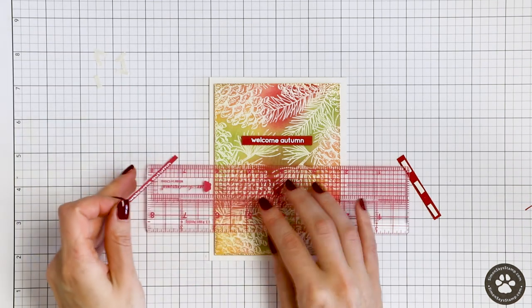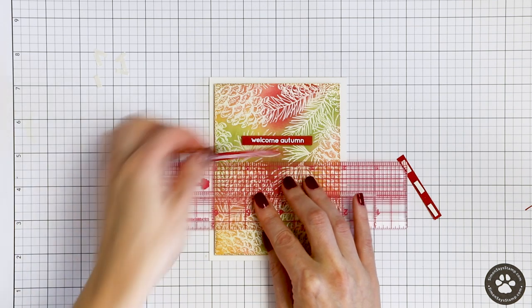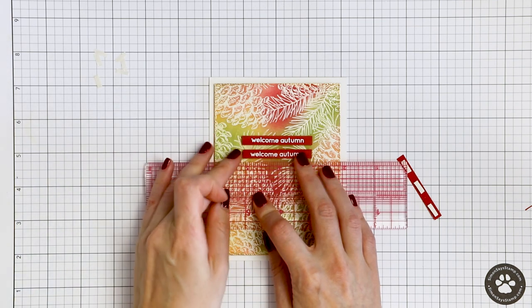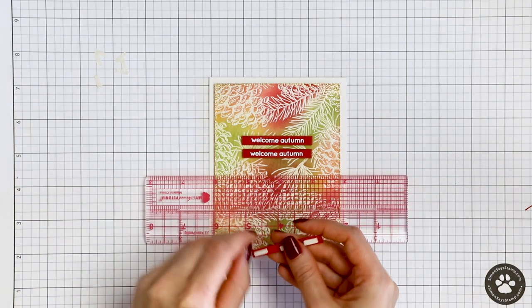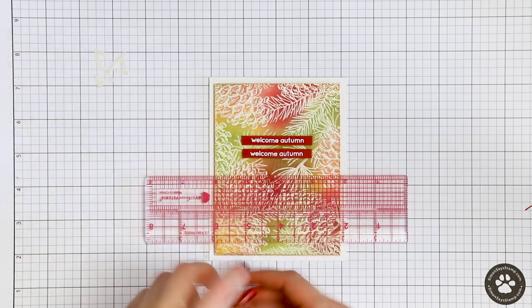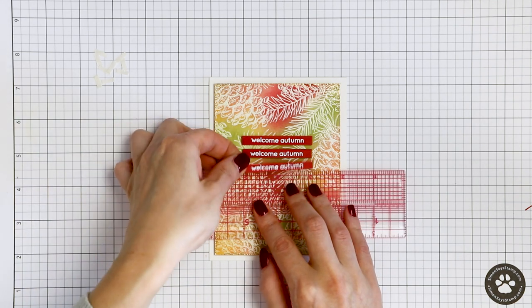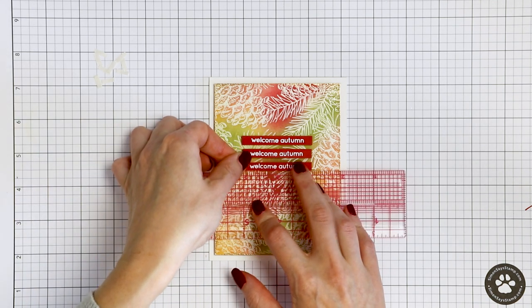I heat embossed it in white embossing powder on Schoolhouse Red cardstock. I did so three times and trimmed those sentiments to three skinny strips. Now I'm using a ruler and grid lines of my grid paper to align and foam mount these strips onto my background.